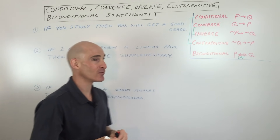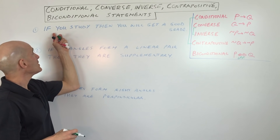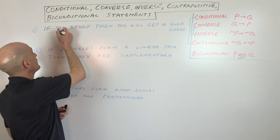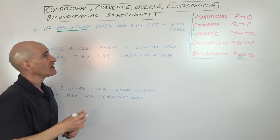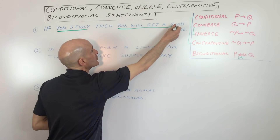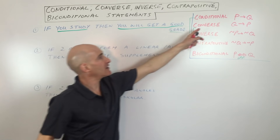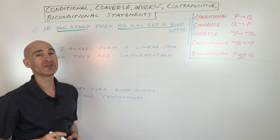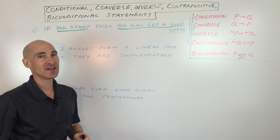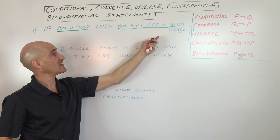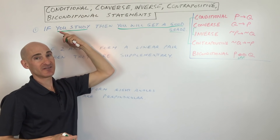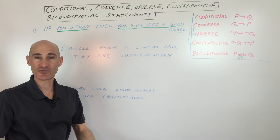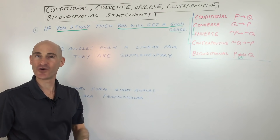Here's an example: 'If you study, then you will get a good grade.' Whatever comes after the 'if' is the hypothesis — 'you study' — and whatever comes after 'then' is the conclusion — 'you'll get a good grade.' The converse would be: 'If you get a good grade, then you studied.' But that's not necessarily true — you could have gotten a good grade because the teacher made the test easy, or you're naturally great at math.